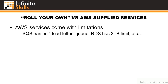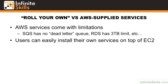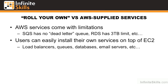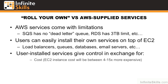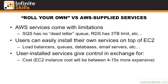For example, SQS has very strict limitations, such as no dead letter queue. RDS has a three terabyte limit. Users can also easily install their own services on top of EC2 — you could build your own load balancer, queue, database, email server, and so on. The user-installed services will give you more control, but the EC2 instance cost to run the service will typically be between 4 to 15 times more expensive than the service provided by AWS.